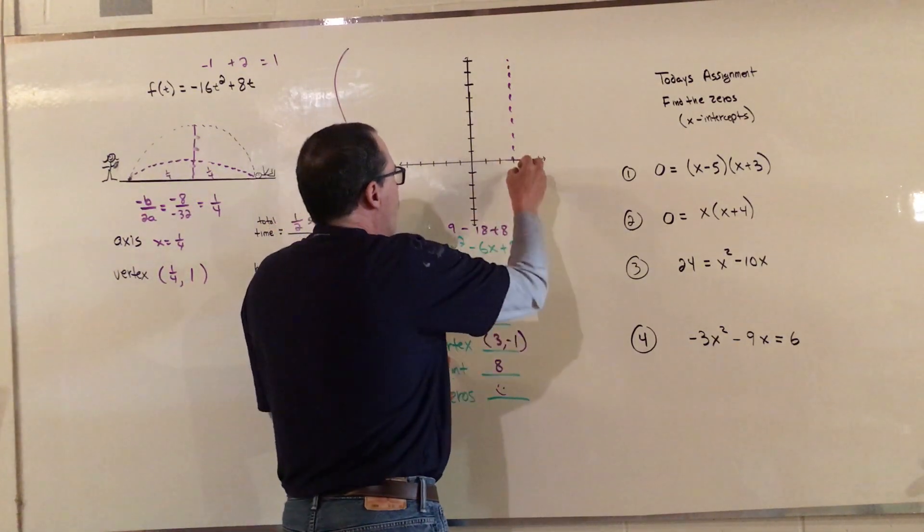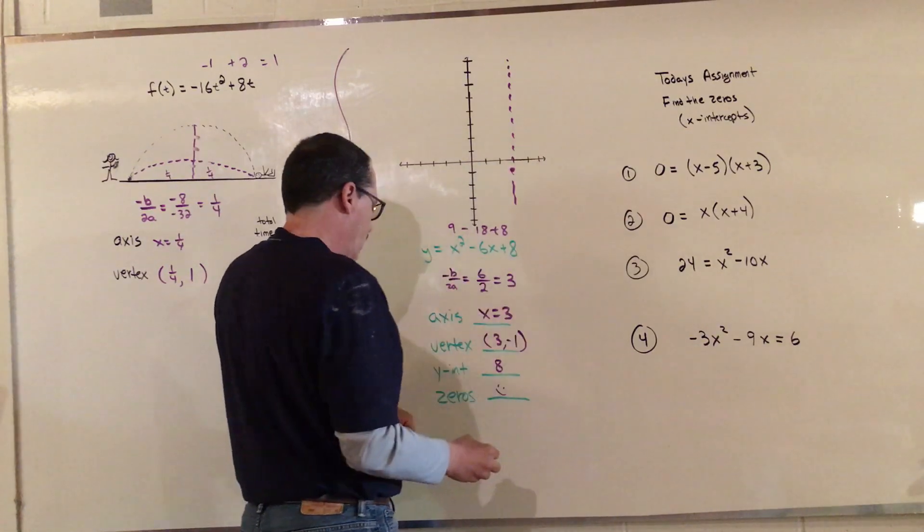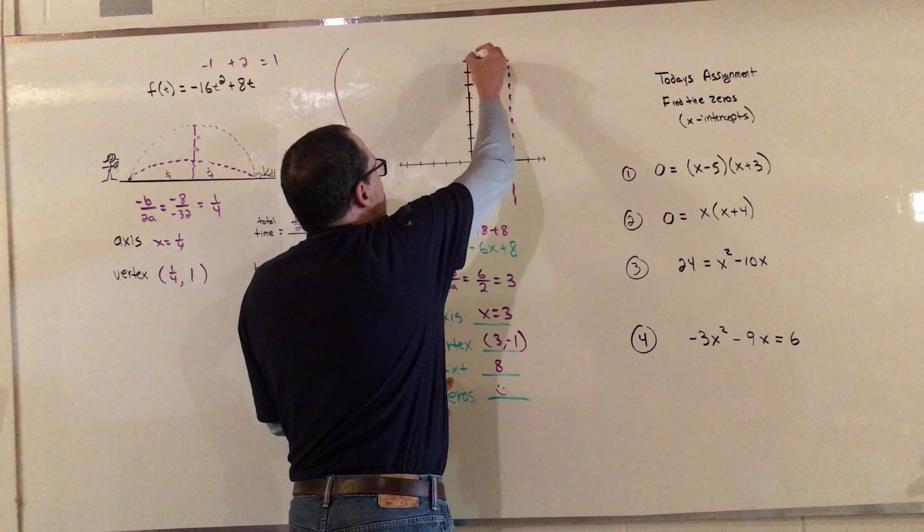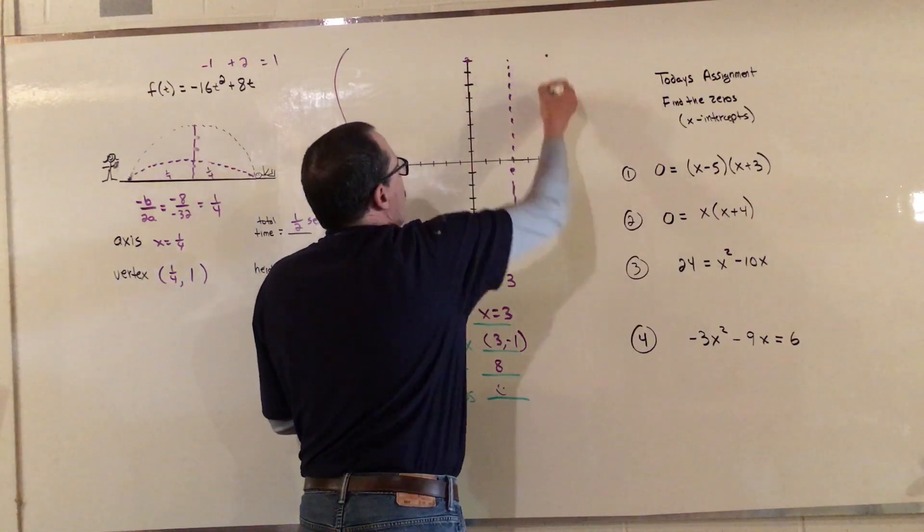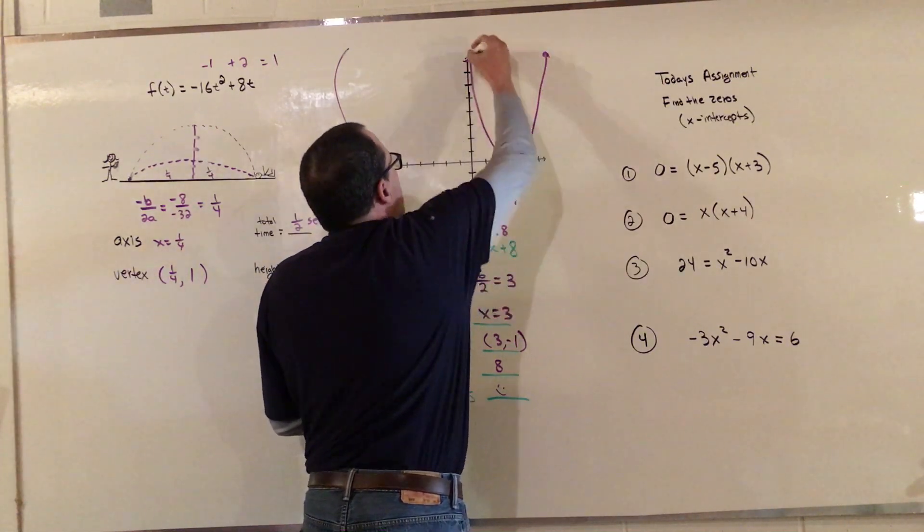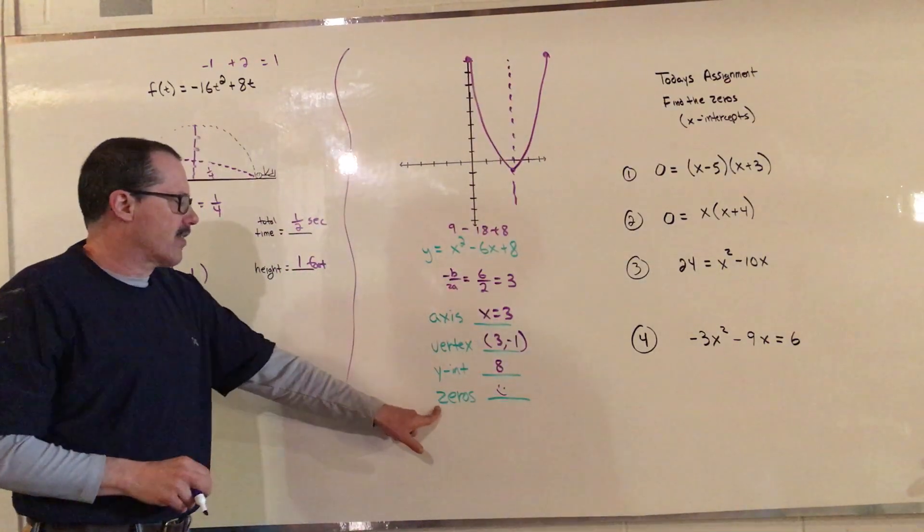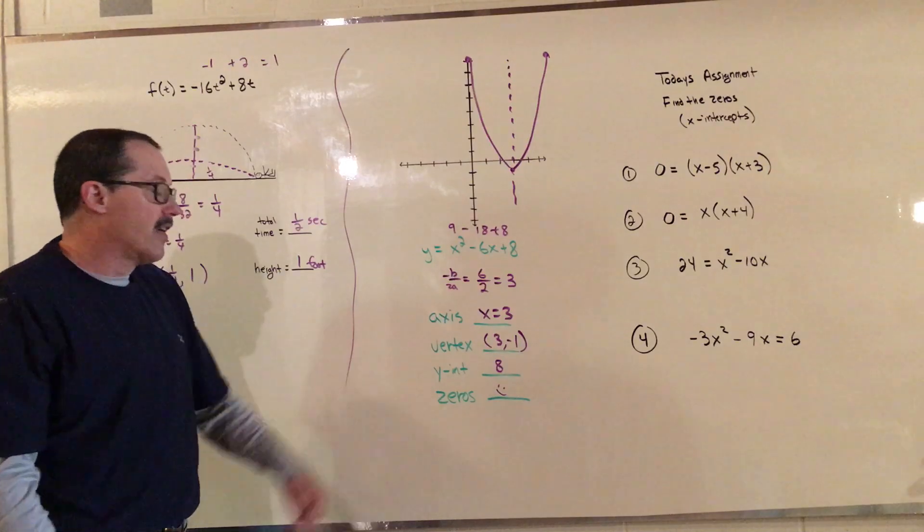The vertex is at 3, negative 1, which would be right there. The y-intercept is 8, which is way up here, which means I come across and I put one here. So for right now those are the three I asked you to do. Today we're going to learn about zeros and then that will give us five points.